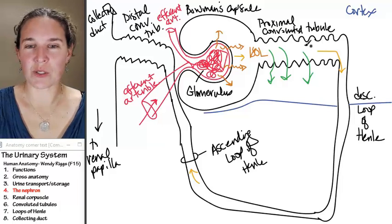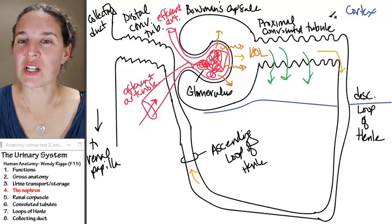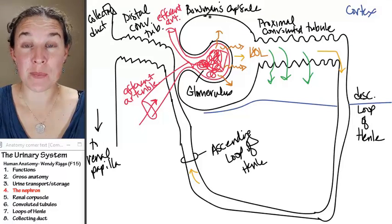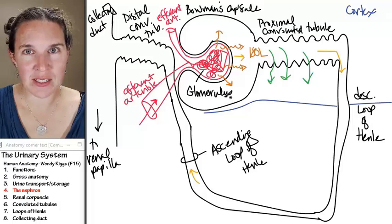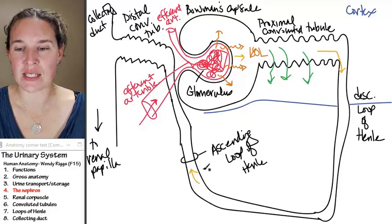Man, the nephron's cool. In the next section, we're going to look at the Bowman's capsule plus glomerulus, which makes the renal corpuscle. So we're going to name some parts in this area.